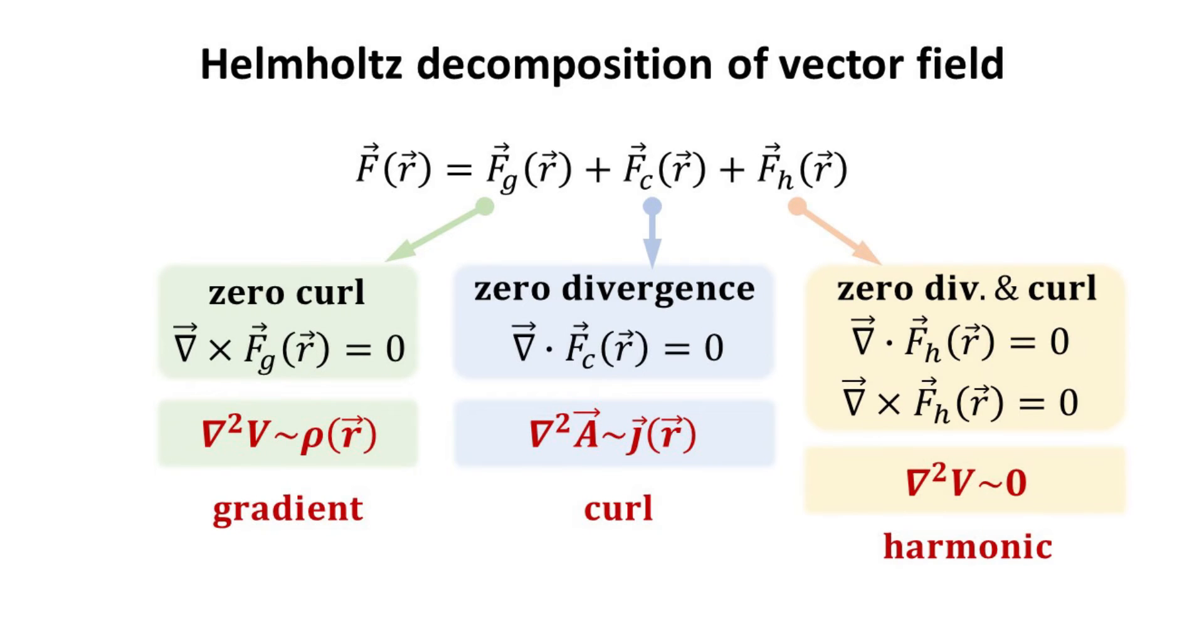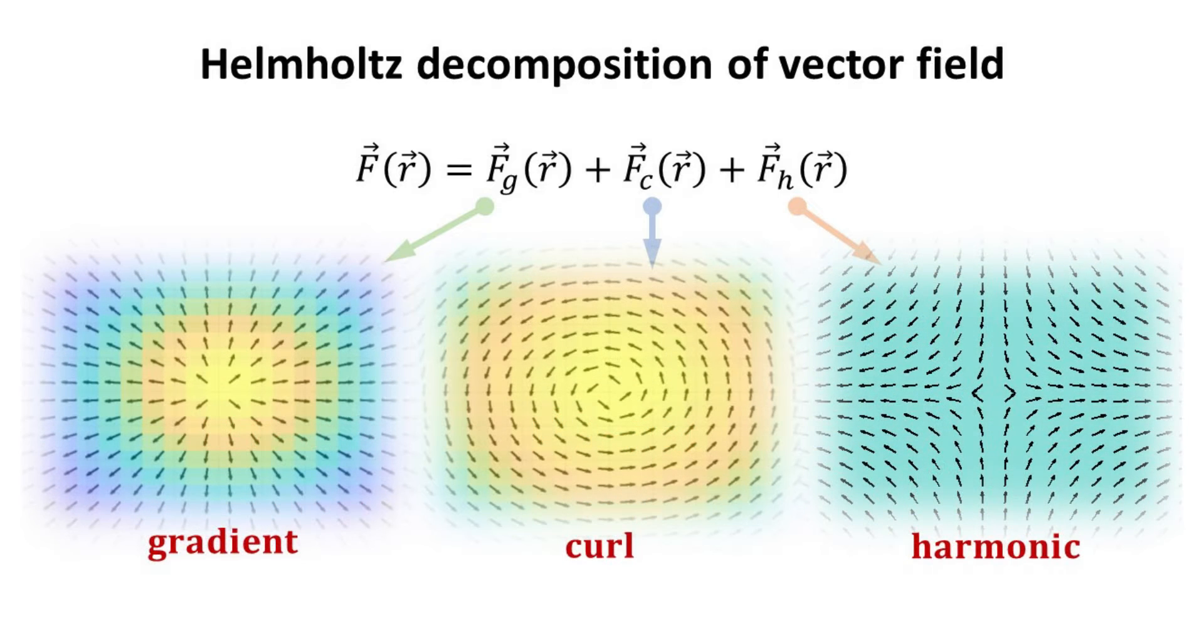While the first two constituents are called the gradient and curl fields, this new component is called the harmonic fields. Harmonic fields are solutions that satisfy the Laplace equation. An example of the harmonic part of the solution is as depicted on the right. Notice how the fields are converging to the center vertically, but moving away from the center horizontally. The center is a saddle point of the scalar potential field.